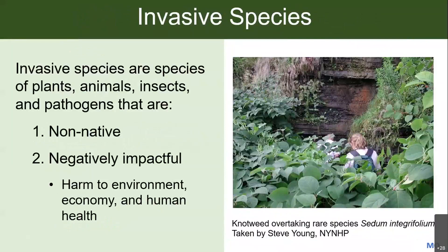Just to get us all on the same page: invasive species are non-native species from somewhere outside of New York that have negative impacts — to the environment, the economy, or human health. As an example, in this picture there's a huge amount of knotweed overtaking a rare species. Knotweed is the green on the bottom with all those leaves, and there are rare species on the rocky outcrop cliff in the back right of the picture. That's one example of an invasive species crowding out rare native species.